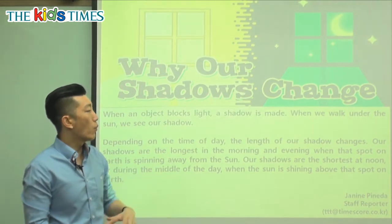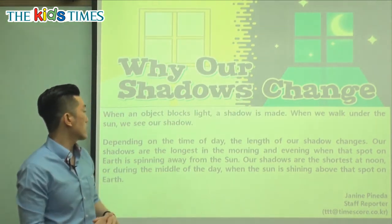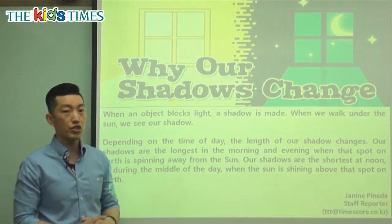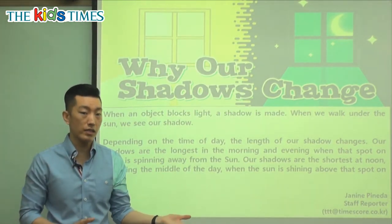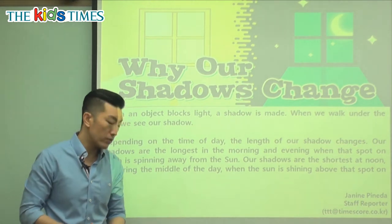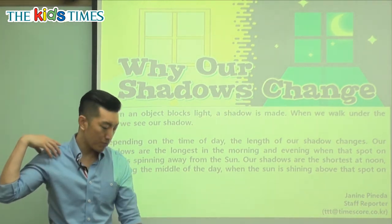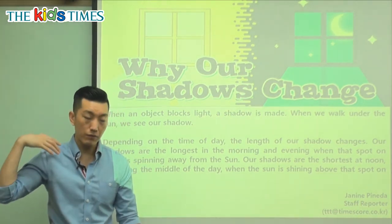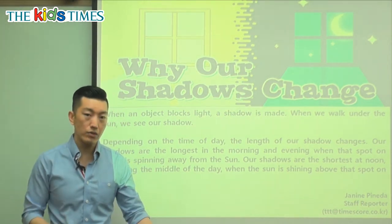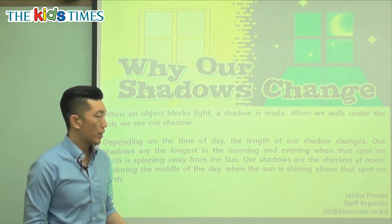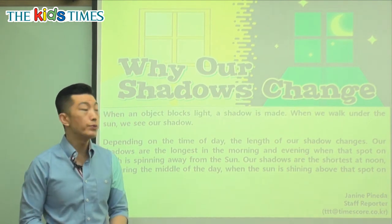When we walk under the sun, we see our shadow. So on a sunny day, if you walk outside and look on the ground, your body sometimes blocks the sun from hitting the ground, so it creates a shadow of you.